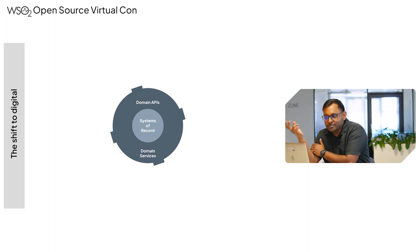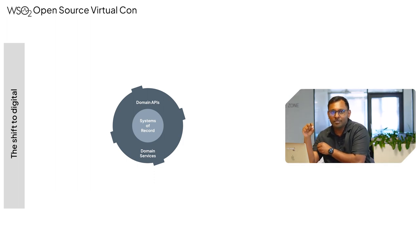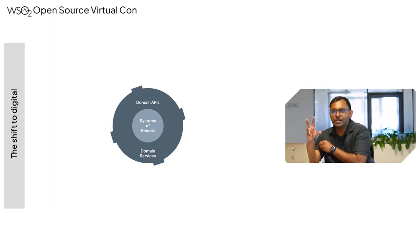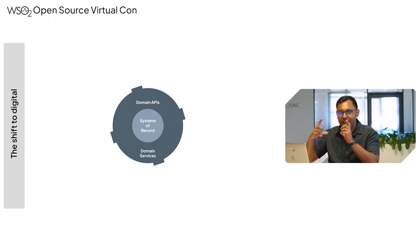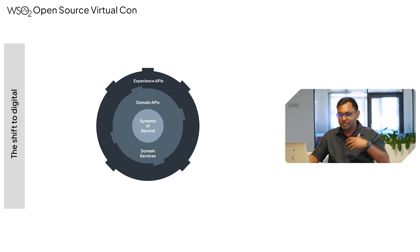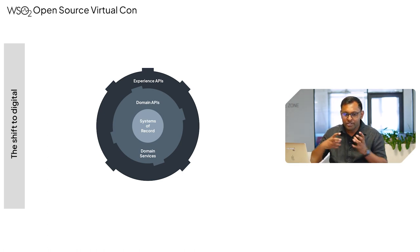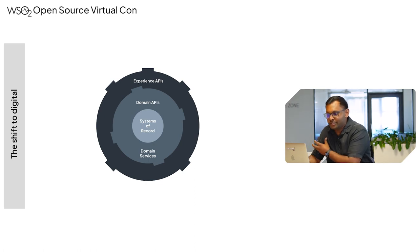From an identity access management perspective, our API security and API access management capabilities become very important to manage those APIs with OAuth tokens and OAuth 2.0 tokens, providing the security required for these APIs. This is where IAM first comes into the picture. These experience APIs are then exposed to various parts of the organization, depending on who the end user is, building out a whole range of digital experiences.